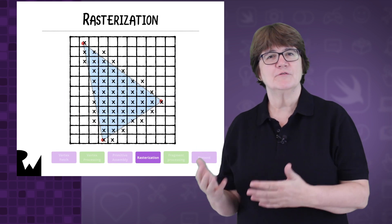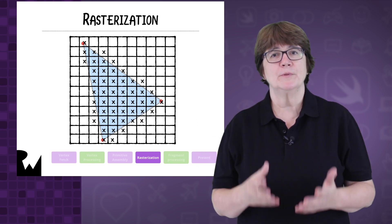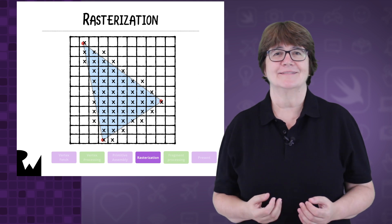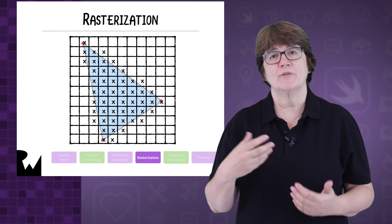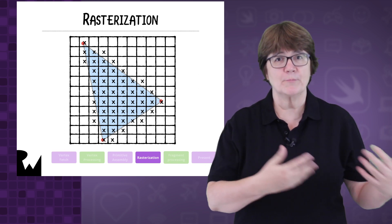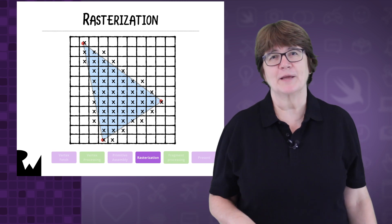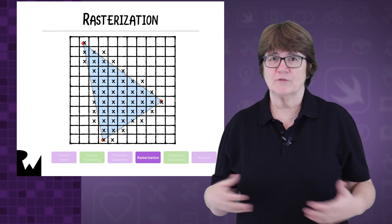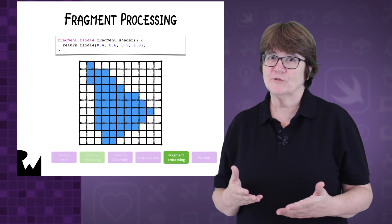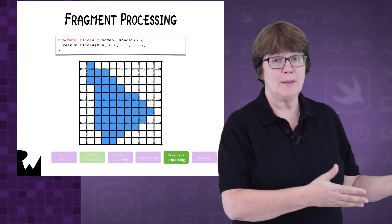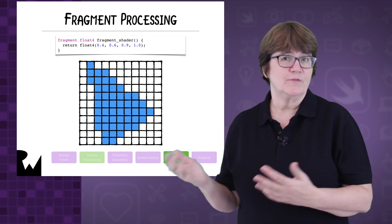The rasterizer converts visible parts of the primitive to fragments. Each fragment contributes to one pixel on the screen. If you've enabled depth testing, then the rasterizer tests whether this fragment is in front of all the fragments from other primitives. If it isn't, then the rasterizer discards the fragment. Only those fragments that are visible on screen proceed down the pipeline to fragment processing. The rasterizer sends fragments down the pipeline.